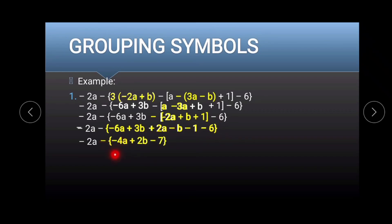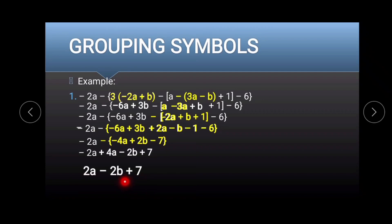Negative 1 minus 6 gives negative 7. Now distribute the negative sign to negative 4a plus 2b minus 7. Negative times negative 4a gives positive 4a, negative times positive 2b gives negative 2b, and negative times negative 7 gives positive 7. Combining negative 2a and positive 4a gives the final answer: 2a minus 2b plus 7.